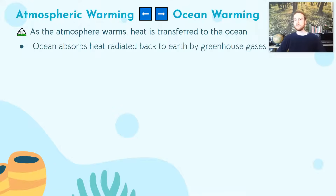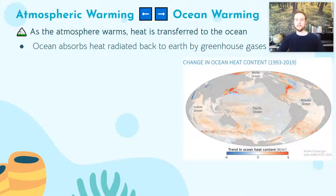Infrared radiation released by Earth's surface — whether that's ocean surface, land surface, or ice surface — is going to be captured by the greenhouse gases in the atmosphere and radiated back to Earth. A lot of that heat is going to be passed into the ocean. We can see a map here courtesy of NOAA showing the change in heat content in the ocean, and much of the ocean is taking on increasing amounts of heat from 1993 to 2019.